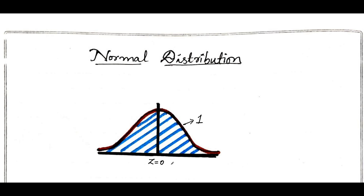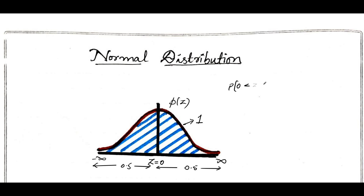The range of this distribution is minus infinity to plus infinity. When I consider the range from z equal to 0 to plus infinity, that will always be equal to 0.5. Similarly, the limit from minus infinity to 0 will also always be equal to 0.5.